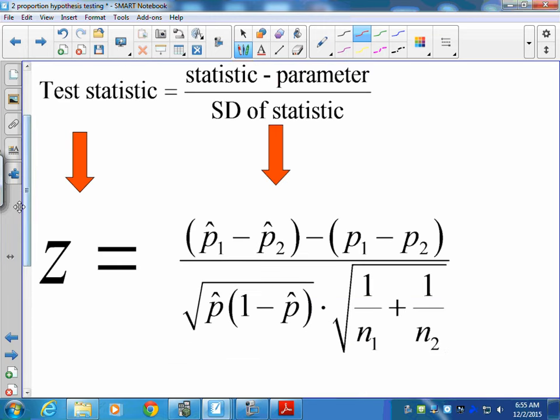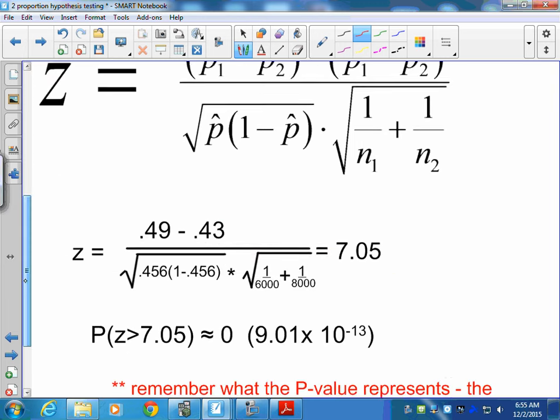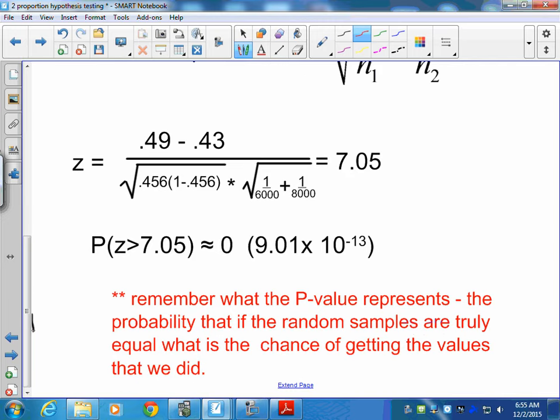Once again, from our formula sheet, we're building our proportions. Notice we're finding the difference of the difference. The good news here, p₁ minus p₂ is zero, so that doesn't have any effect on our overall calculation when we plug our values in. And remember, for full credit, you have to show your z calculation and your probability statement. And we can see in this situation, a probability of approximately zero when we type it into the calculator and find our value. And remember what that p-value represents: the probability if the random samples are truly equal, you would get the difference that we see here in this situation.